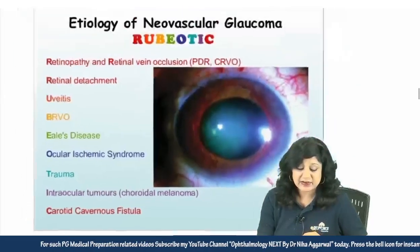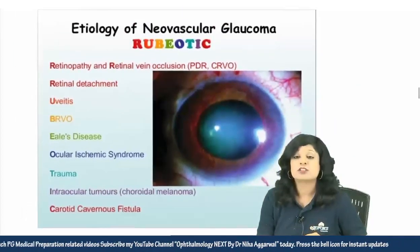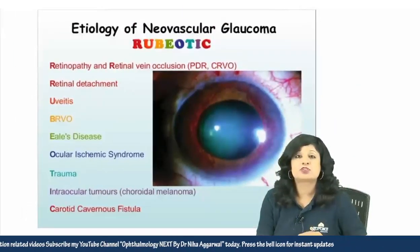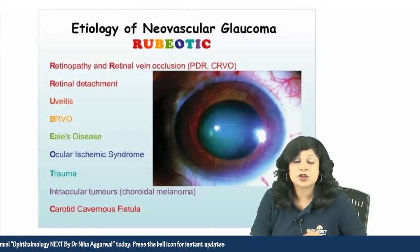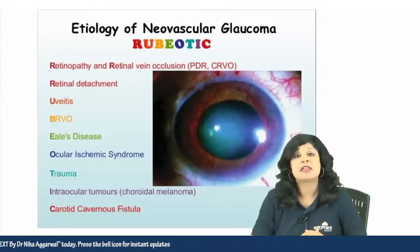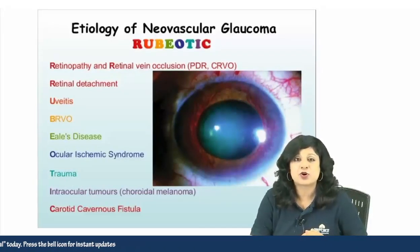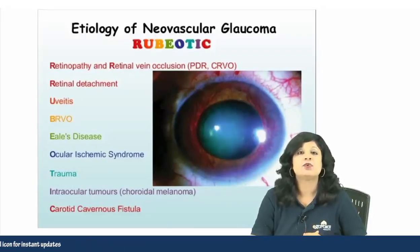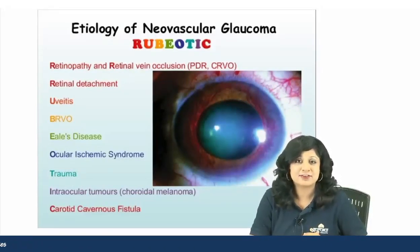You can easily remember the causes of neovascular glaucoma using the mnemonic RUBIOTIC, and remember the 100-day glaucoma occurs specifically in CRVO.